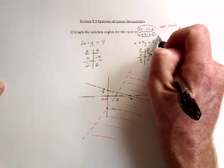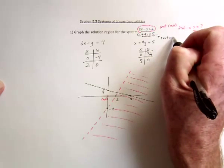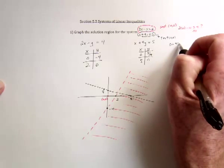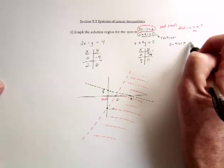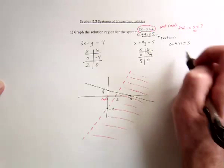So for this one, test the point 0, 0. And it's going to say 0 plus 4 times 0 is less than or equal to 5. So is 0 smaller than 5? Yes, that's true.